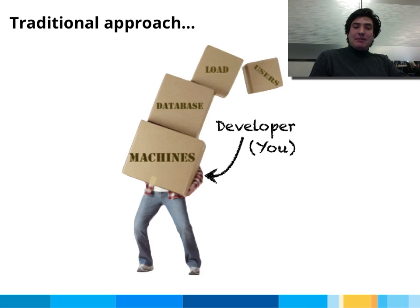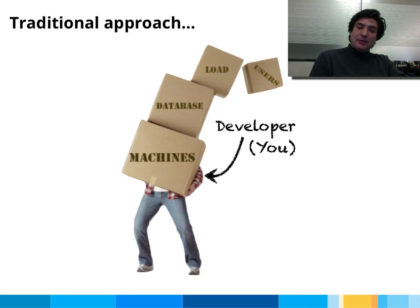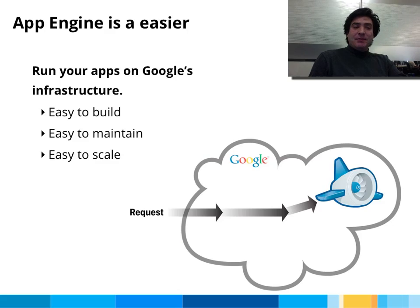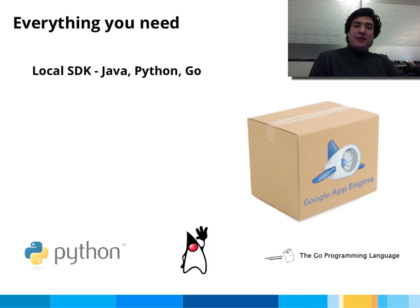The traditional approach to application development has been painful and cumbersome. You've had to manage machines, figure out how to get a database running, scale your load, and at the end you don't really spend a lot of time on your users. App Engine is easier. We help you run your apps on Google's infrastructure. We make it easy to build, easy to maintain, and easy to scale your application.